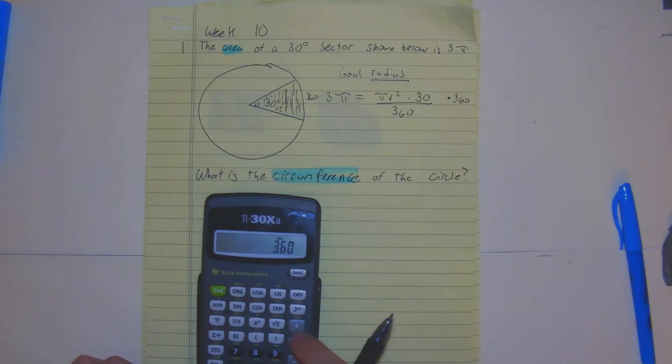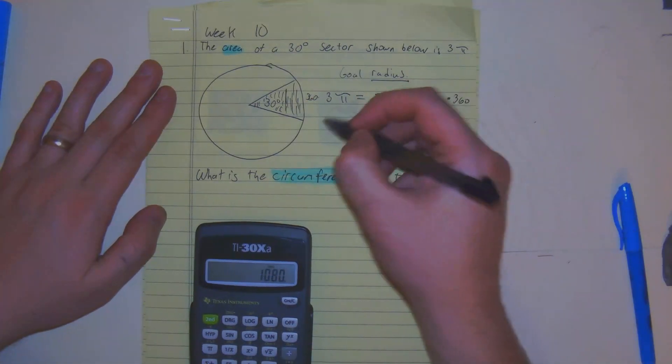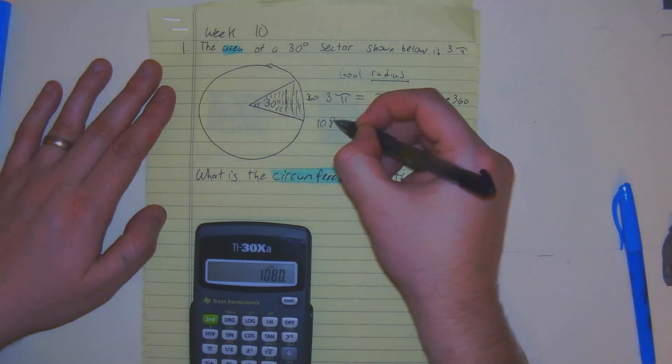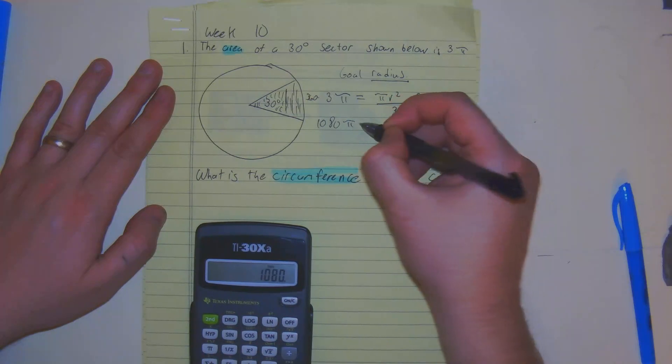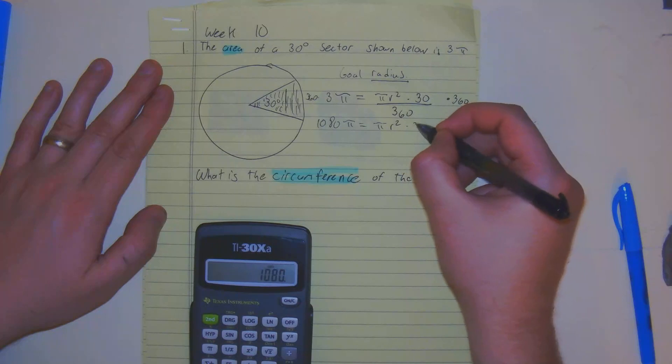Here, 360 times 3 gets 1080. Don't touch the pi because we have pi on both sides. We want to get 1080 pi is equal to pi r squared times 30.